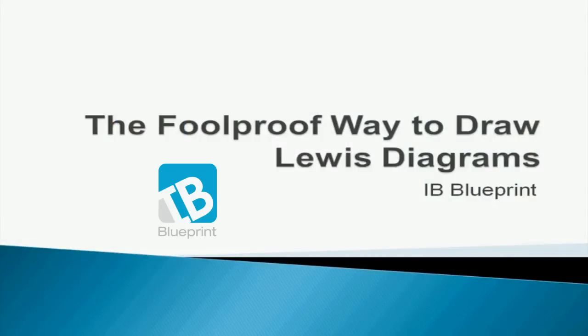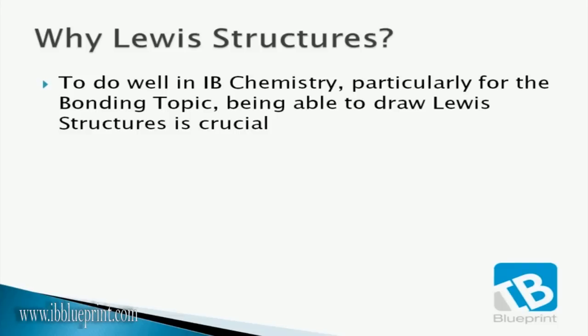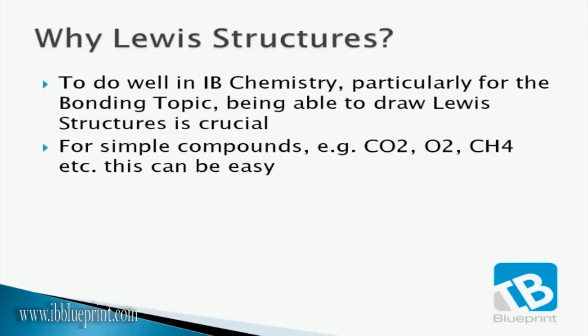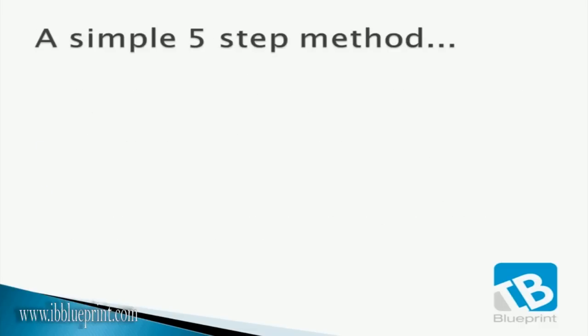Welcome to another video by IB Blueprint. Today we discuss the foolproof way to draw Lewis diagrams. Lewis structures are crucial to do well on the IB chemistry bonding topic. For simple compounds such as carbon dioxide, oxygen, or methane this can be easy. However, for more difficult compounds this process can be fairly confusing, e.g. SO₄²⁻, NO₃⁻, CO₃²⁻, or NO₂⁺. We will go through a simple and straightforward five-step method that you can use for almost all structures.